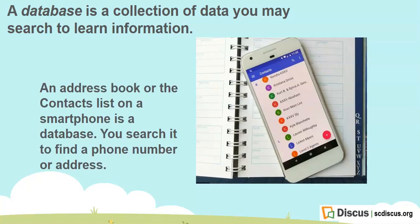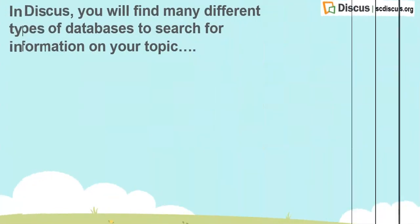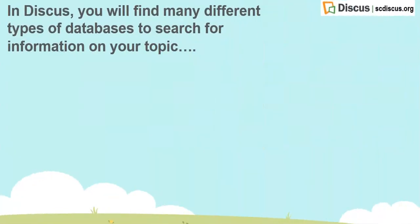An address book or the contacts list on a smartphone is a database. You search it to find a phone number or address. In Discus you will find many different types of databases to search for information on your topic.